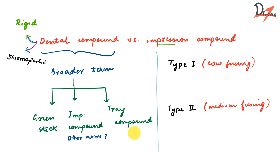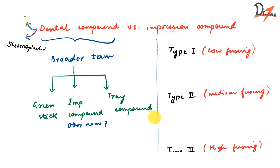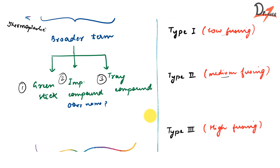Now the classification: green stick is Type 1, also called low fusing. Impression compound is Type 2, also called medium fusing. Tray compound is Type 3, also called high fusing. Let's quickly go through the uses of each type.